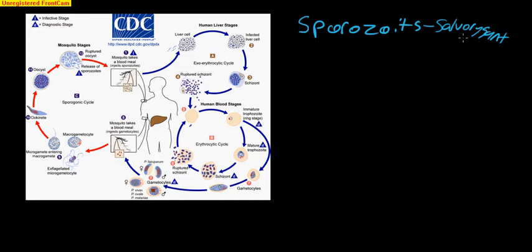So, sporozoites are the malaria that exists in the salivary gland, in the vector. So, the vector, it has a mouth, it has saliva like us, and the malaria exists in its saliva. So, when the mosquito takes a blood meal, it injects the sporozoites into the human.